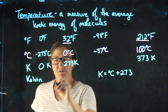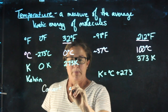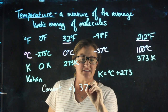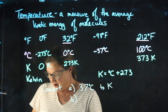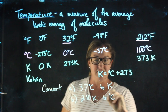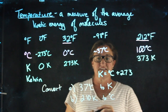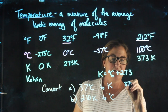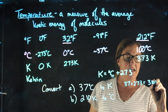Taking a look at some quick examples: suppose I want to convert 37 degrees Celsius to Kelvin. 37 degrees Celsius to Kelvin — I'm going to plug the 37 in. 37 plus 273 will give me 310 Kelvin.